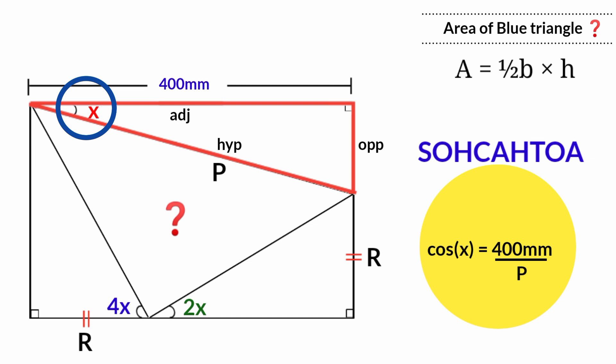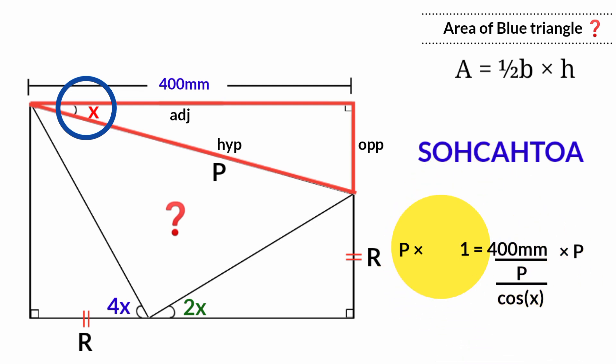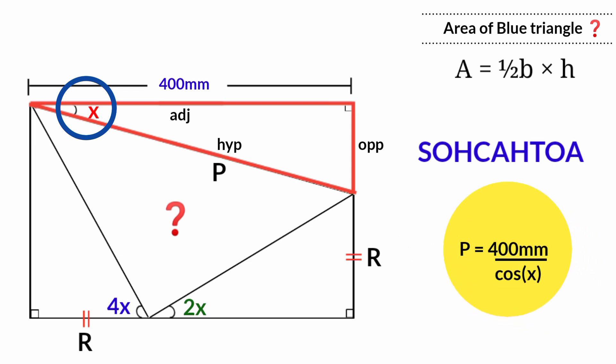P is our target. We make it the subject of the formula by multiplying both sides by P and dividing both sides by cos X. So P = 400mm / cos X.